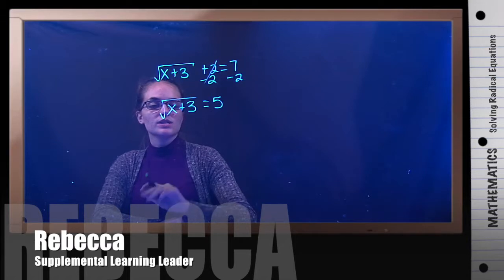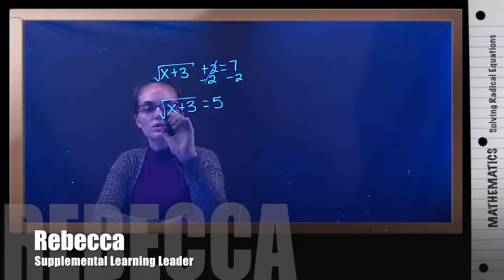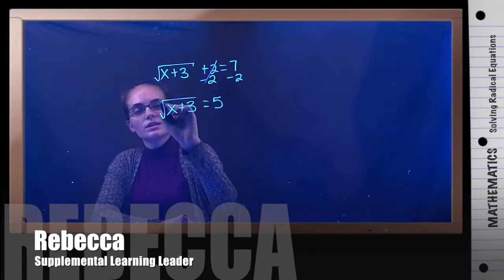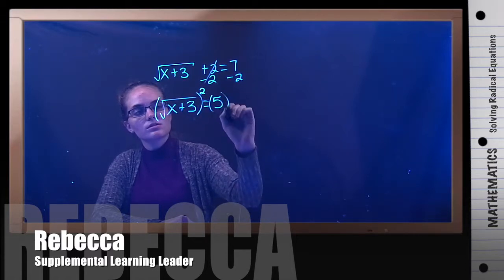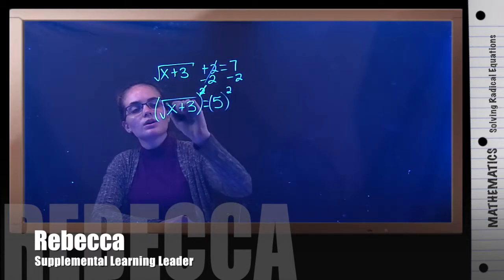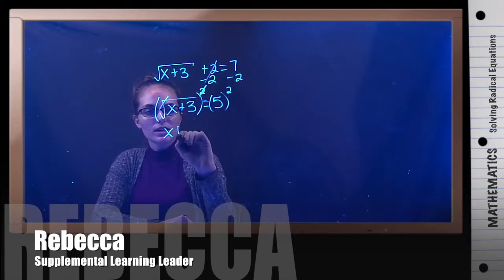Now, to get x alone, we can't subtract the 3 because the 3 is under the radical. So we have to get rid of the square root first. And the opposite of a square root is squaring both sides because the square root and the square will cancel out. And all you'll have on this side is x plus 3.